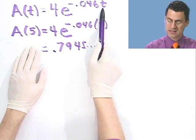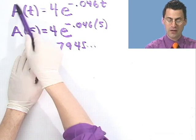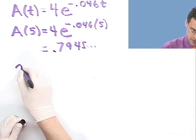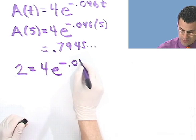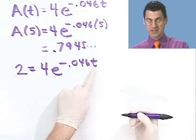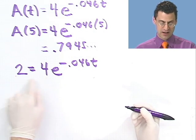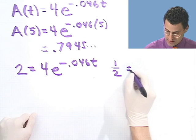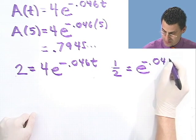Remember, half-life is the amount of time required so that you have the amount cut in half. We know that we started with 4, so the amount when we have half would plainly be 2. The question really is: what is the time — how long do I have to wait — for the amount that remains to be equal to 2, since I started with 4? So I can set up an equation: 2 equals 4e to the minus 0.046t. And now I have to solve this for t. I can divide both sides by 4 to get one half equals e to the minus 0.046t.